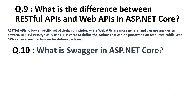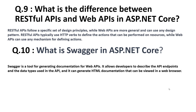The tenth question is: what is Swagger in ASP.NET Core? Swagger is a tool for generating documentation for Web APIs. It allows developers to describe the API endpoints and the data types used in the API, and it can generate HTML documentation that can be viewed in a web browser.